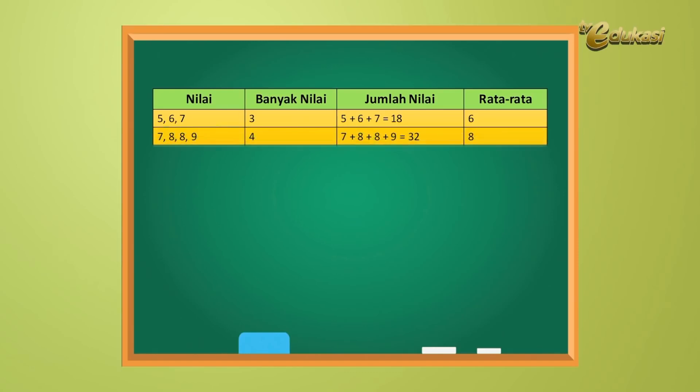Nomor 2, nilai 7, 8, 8, 9. Banyaknya nilai 4. Jumlah nilai 7 tambah 8 tambah 8 tambah 9 sama dengan 32. Rata-rata 8.